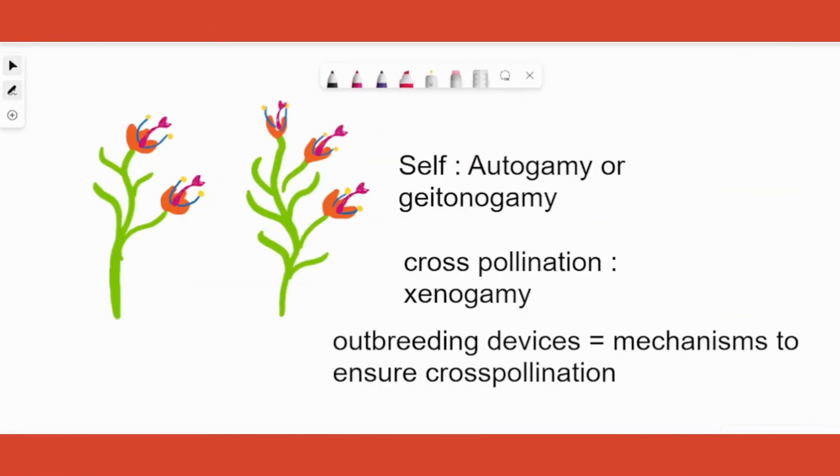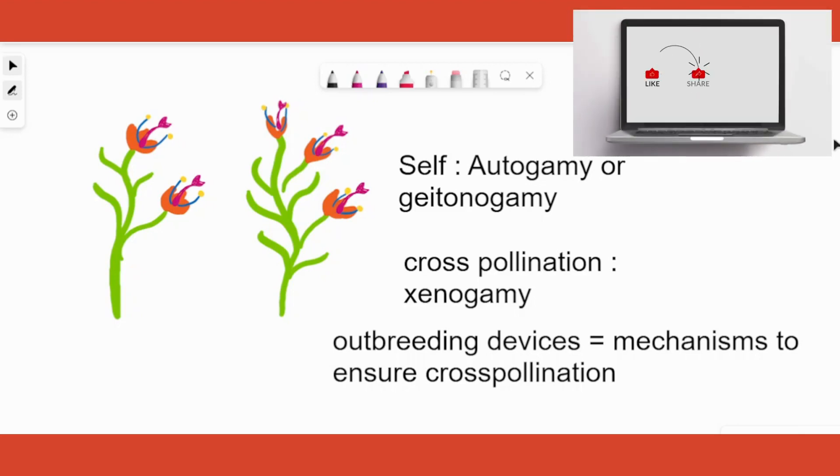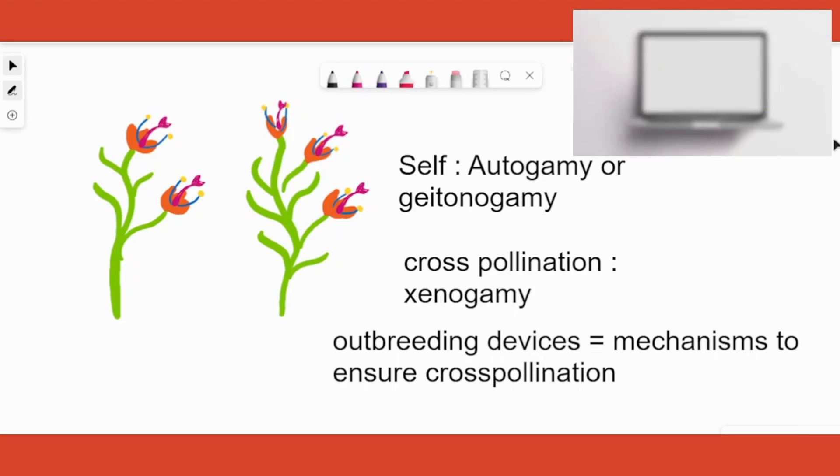Hi students, today we are going to understand the topic pollination from Chapter 2, Sexual Reproduction in Flowering Plants, 12th CBSE biology. Before we go into the topic, if you haven't watched the previous videos on microsporogenesis, megasporogenesis and so on, please watch those videos.